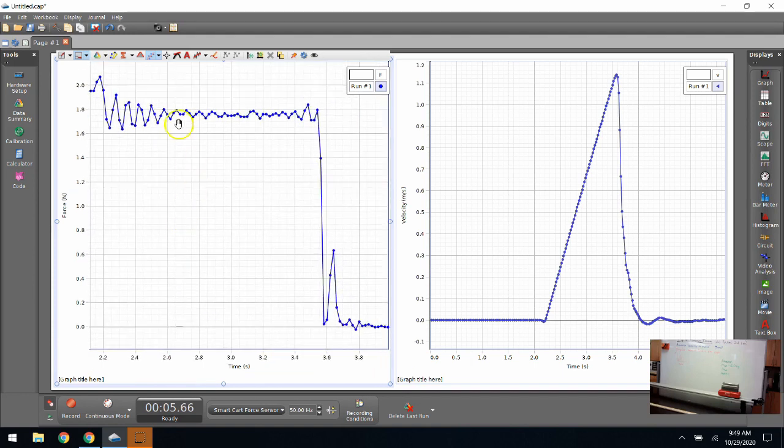Look for the most consistent data on my force graph, which is from about 2.6 to about 3.4 seconds. I'm going to draw a box around 2.6 to 3.4, and I'm going to click the area button on that to get the impulse. Right there I've got an impulse of 1.41 newtons times seconds.